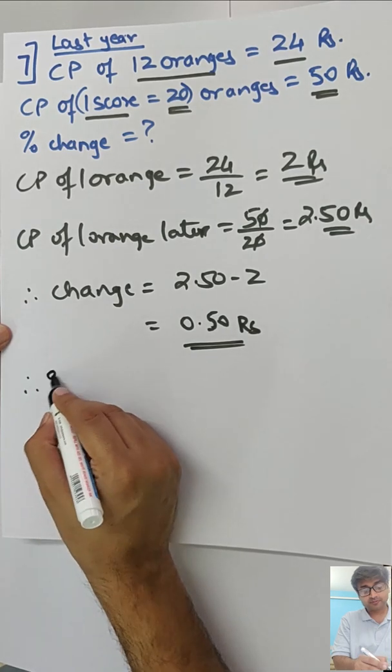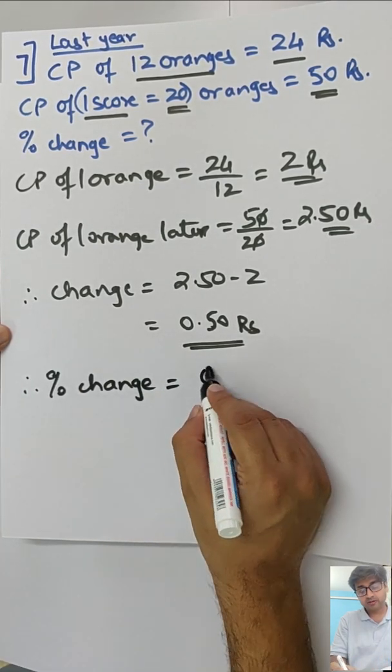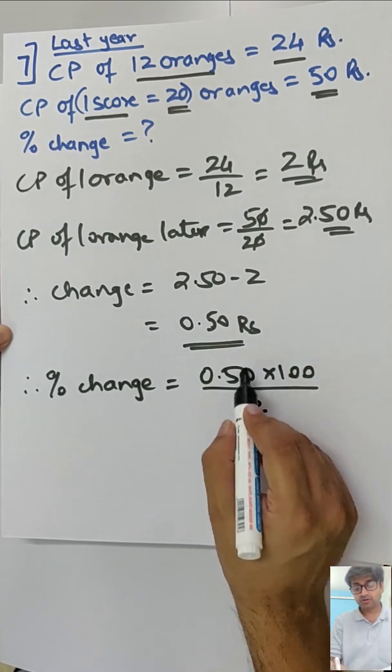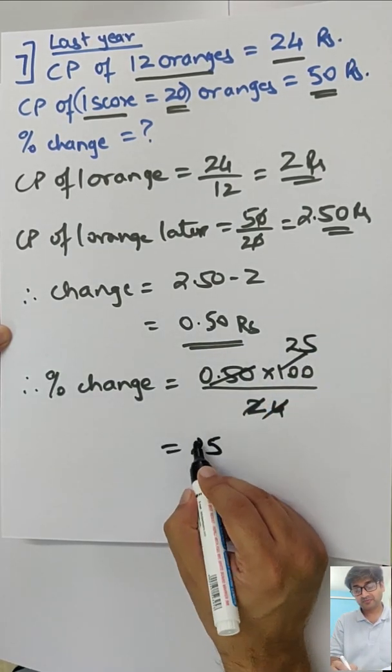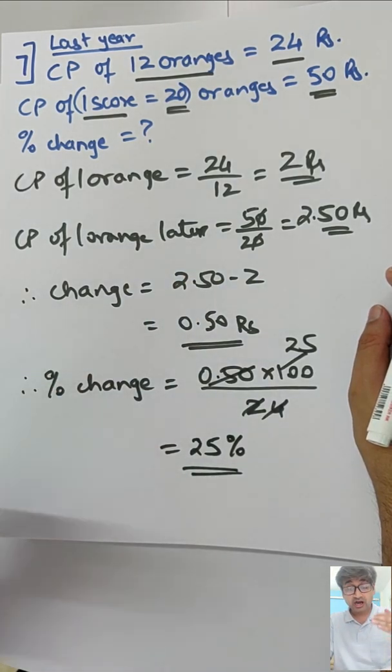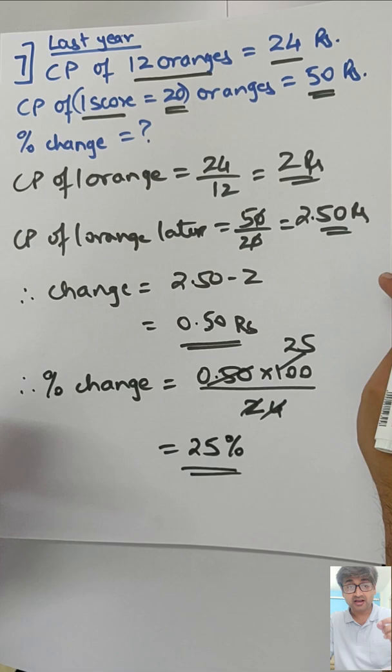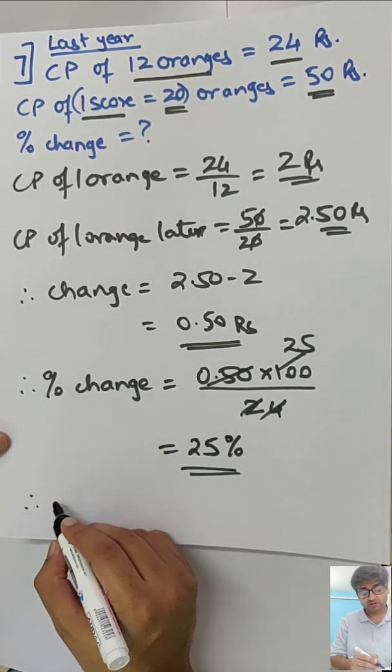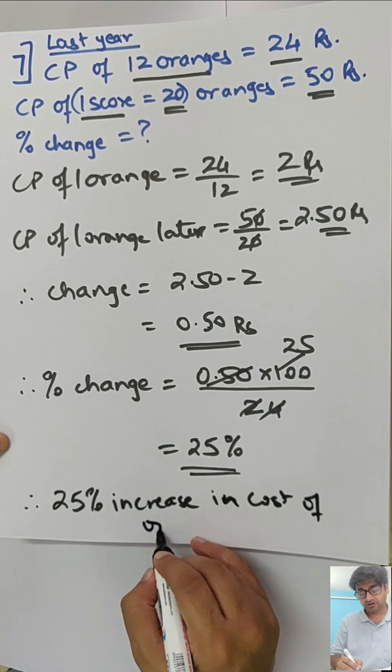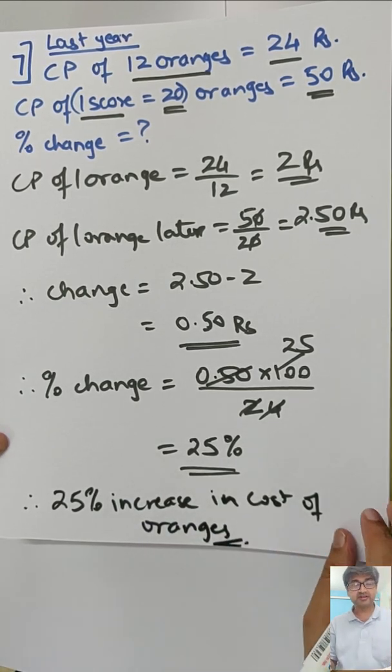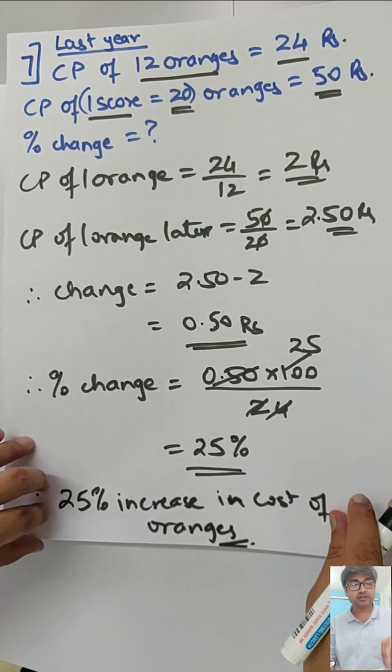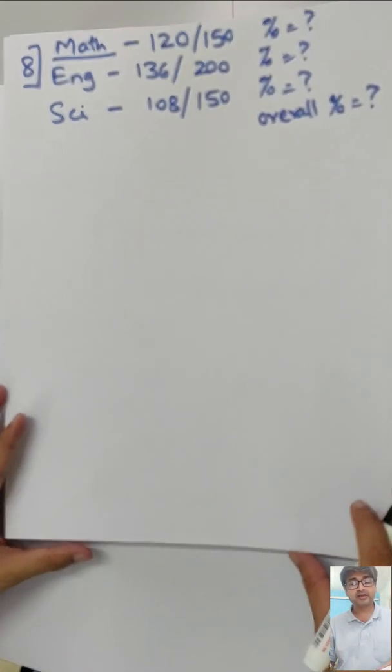So how much is the change? Change has become 2.50 to 2, 50 paisa change. Now 50 paisa change is how much percent? Therefore percent change will be 0.50 into 100 upon original. Original is 2 rupees, not the final. So that's 25%. Did you even imagine 50 paisa change from 2 rupees to 2.50 for one orange accounts to 25% change. Therefore, 25% increase in cost of oranges.